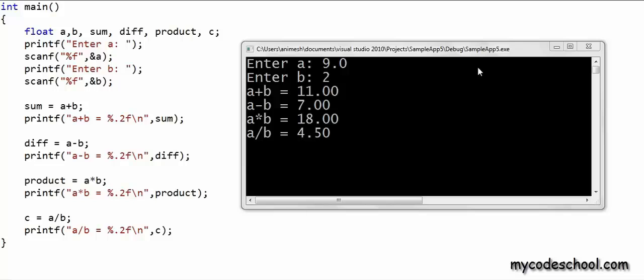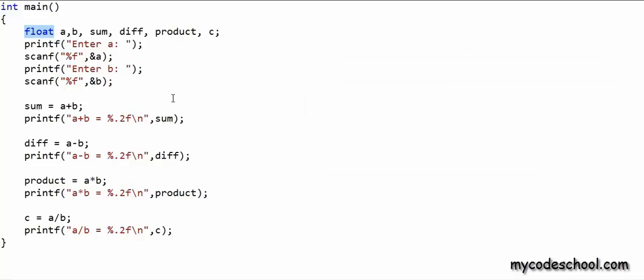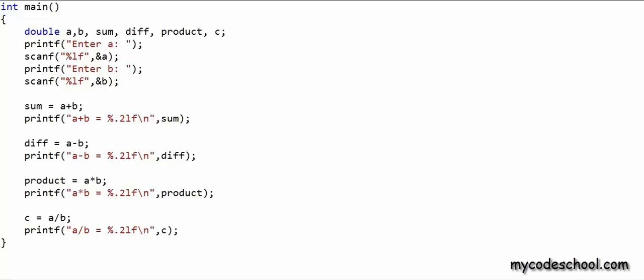There is another data type that can be used to store real numbers and it's called double. Instead of using float, we could use double. With double, you get twice the memory or storage compared to float. In a typical architecture, the size of float would be 4 bytes or 32 bits, and the size of double would be 8 bytes or 64 bits. If my variables are of type double, I need to use %lf as the placeholder in the format strings passed to printf and scanf.